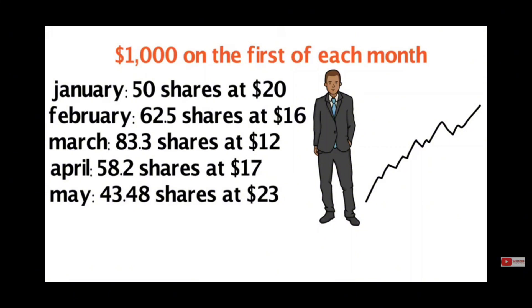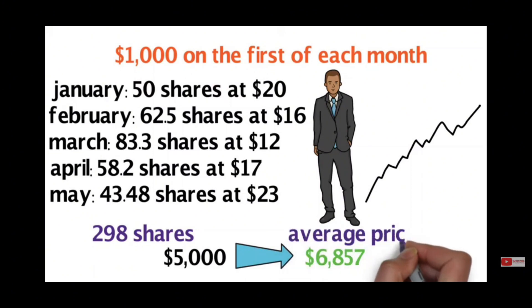Just five months after beginning to contribute to the fund, the investor owns 298.14 shares of the index. The investment of $5,000 has turned into $6,857. The average price of those shares is $16.77. Based on the current price of the shares, the investment of $5,000 has turned into $6,857.